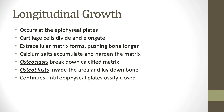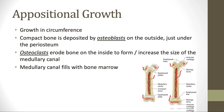This continues until the epiphyseal plates ossify closed, which is signaled by sex hormones changing during puberty. Next, we have appositional growth, which is the growth in terms of circumference. Compact bone is deposited by osteoblasts on the outside of the bone, just under the periosteum, causing the wall to get thicker. Then osteoclasts erode the bone on the inside to form or increase the medullary canal. We first add support to the outside, then take away from the inside. Once the medullary canal is widened, it fills with bone marrow.